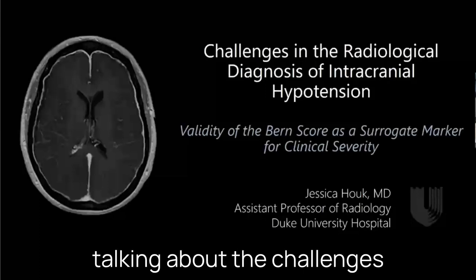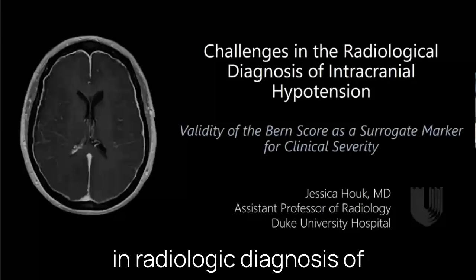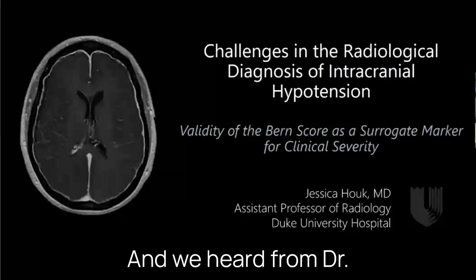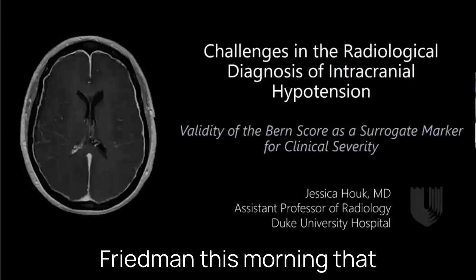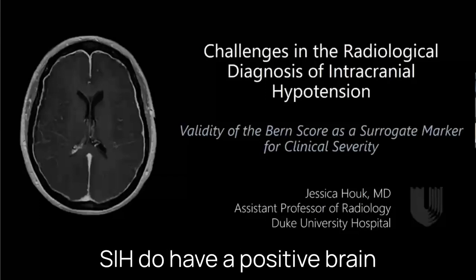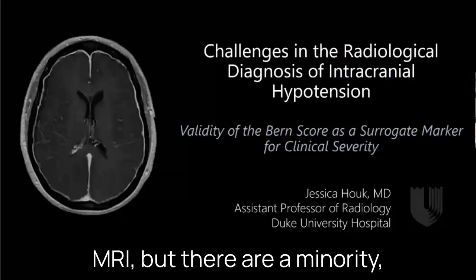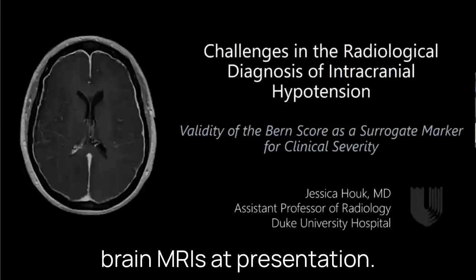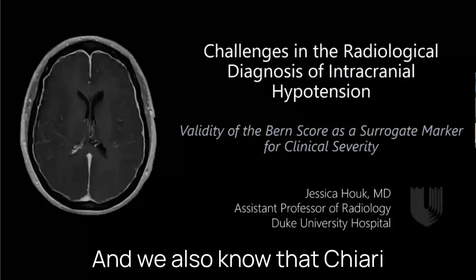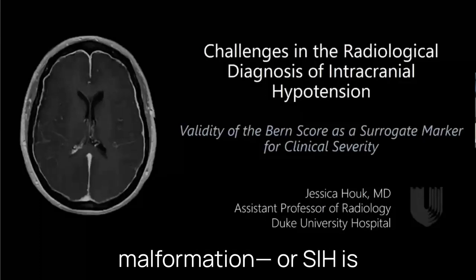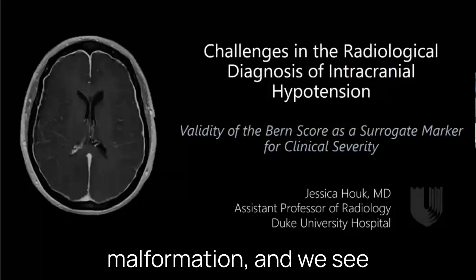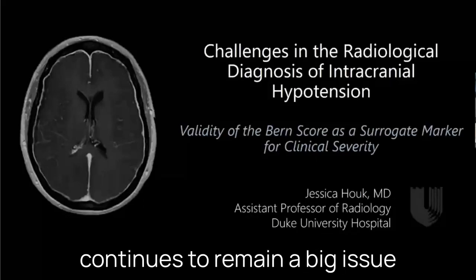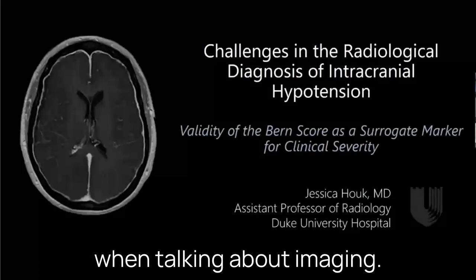Today I was charged with talking about the challenges in radiologic diagnosis of intracranial hypotension. Most of you know that's a very broad topic. We heard from Dr. Friedman this morning that the majority of patients with SIH do have a positive brain MRI, but there are a minority — somewhere in the range of 10 to 15 percent — that do have negative brain MRIs at presentation. We also know that SIH is often misdiagnosed as Chiari malformation, and we see that not infrequently in the reading room, so that continues to remain a big issue when talking about imaging.